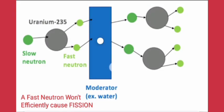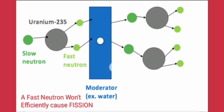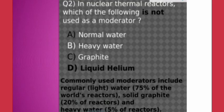Before knowing the answer, we should understand what a moderator is. In a nuclear thermal reactor where the fission reaction takes place, a moderator is used because when a slow neutron hits a heavy nucleus — that is uranium-235 — it produces two fast neutrons. These fast neutrons carry forward the fission reaction, but fast neutrons won't efficiently cause fission, so the moderator is used to slow them down.